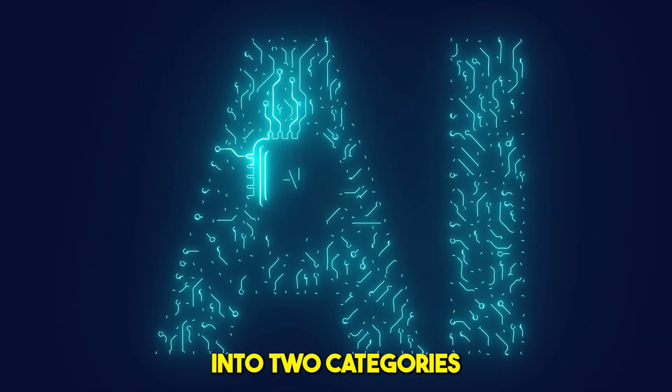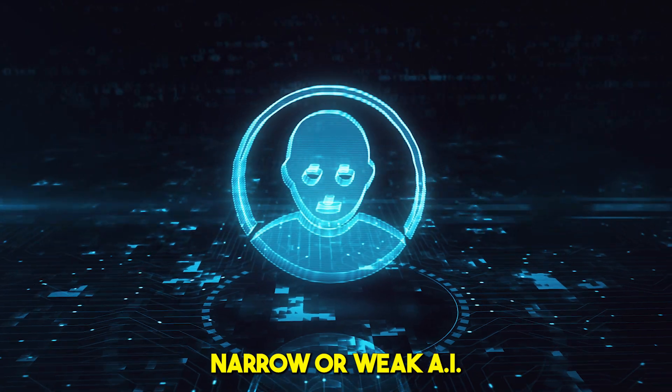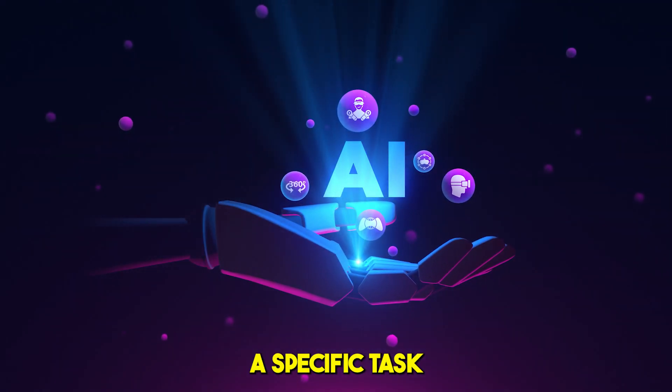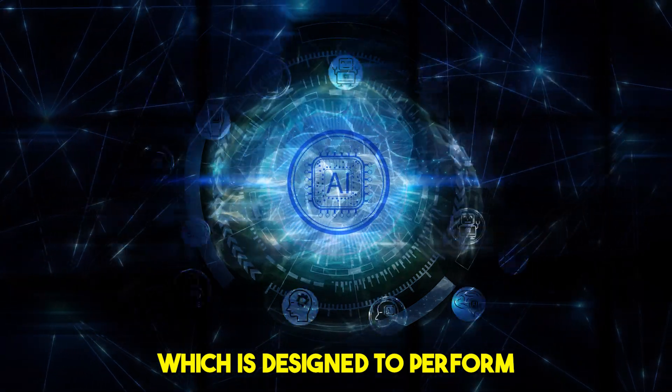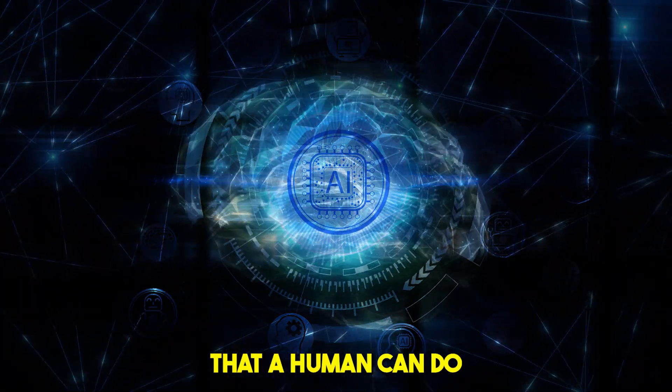AI can be divided into two categories: narrow or weak AI, which is designed to perform a specific task, and general or strong AI, which is designed to perform any intellectual task that a human can do.